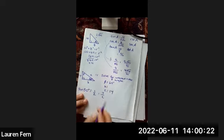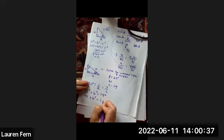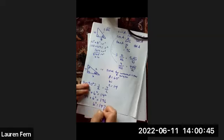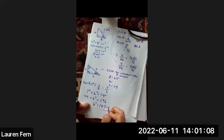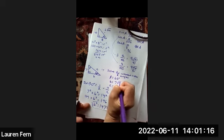Once we have c equal to 14, we use the Pythagorean theorem: 7 squared plus b squared equals 14 squared, so 49 plus b squared equals 196, giving b squared equals 147. Now, 147 is divisible by 3 — that's 3 times 49 — and the square root of 49 is 7, so b equals 7 root 3.